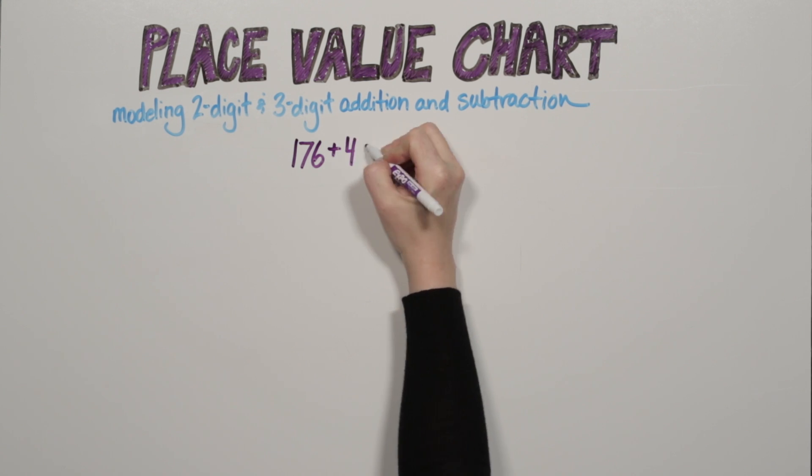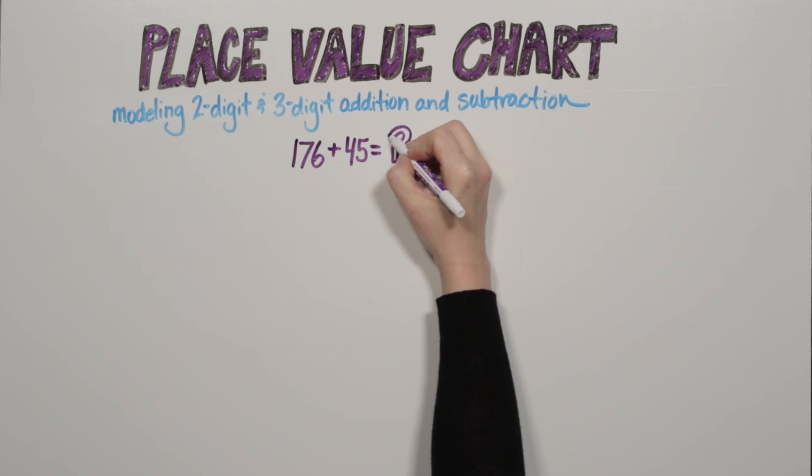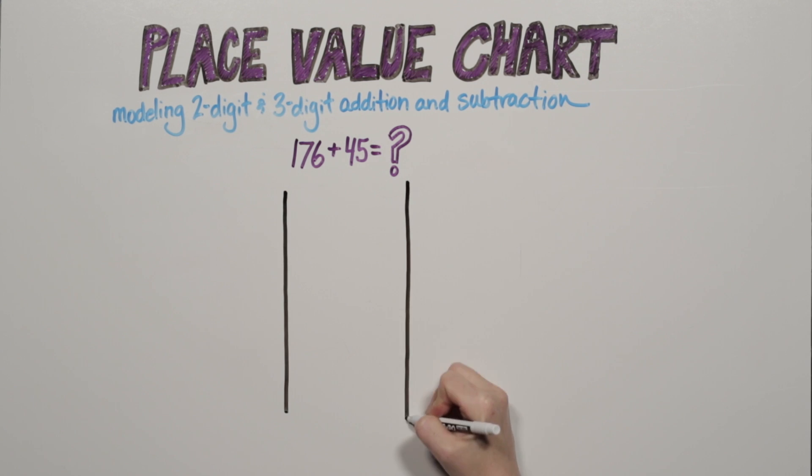176 plus 45. How do we solve this? Let's make a helpful place value chart.